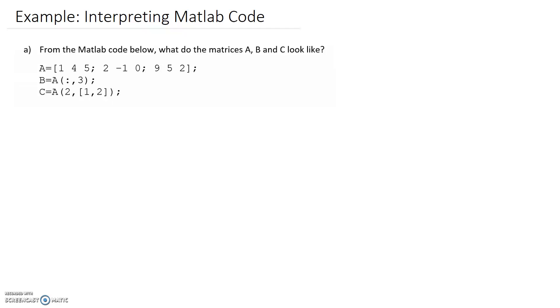In this video, we're going to go through three different parts of interpreting MATLAB code. The first part A here is looking at matrices. From the MATLAB code below, what do matrices A, B and C actually look like?